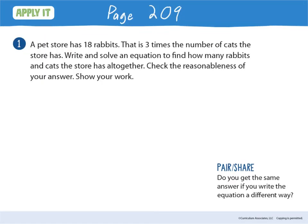Open your math journals to page 209. If you're looking at it upside down, that's 605. Let's take a look at page 209. A pet store has 18 rabbits — a lot of bunnies running around — and that is three times the number of cats the store has. Write and solve an equation to find how many rabbits and cats the store has altogether. Check the reasonableness of your answer and show your work.